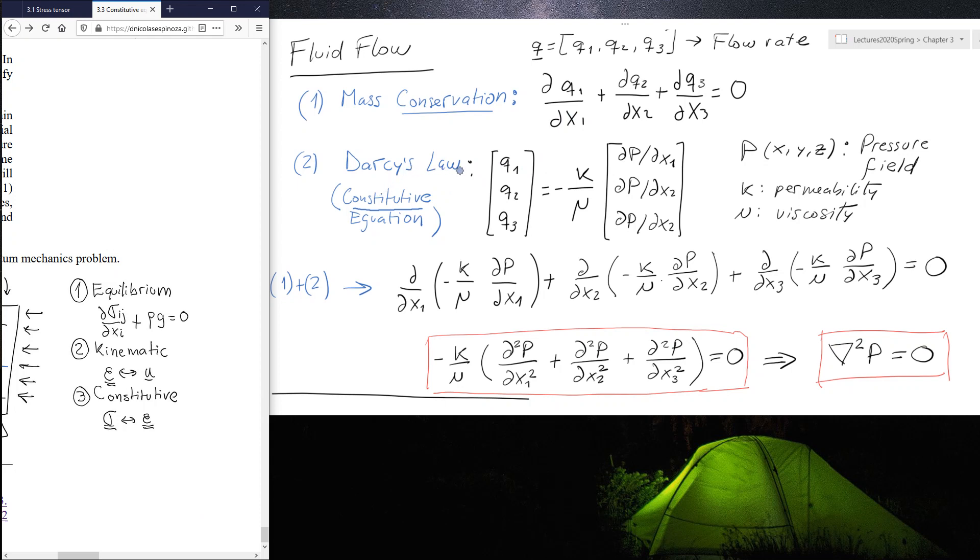Second, we can also use Darcy's law in fluid flow. And Darcy's law is actually a constitutive equation. It's a property of the porous medium that tells us that the flow rates are proportional to permeability, inversely proportional to fluid viscosity, and proportional to the gradients of pressure depending in which direction I am measuring this flow rate, direction one, two, or three. Then I have to consider the gradient in direction one, two, or three.